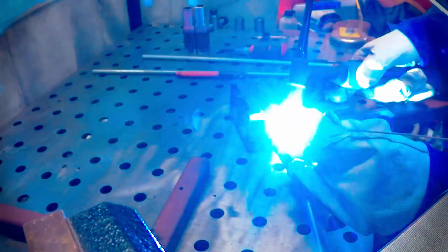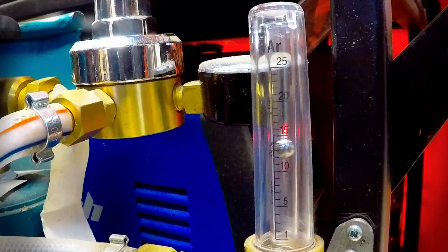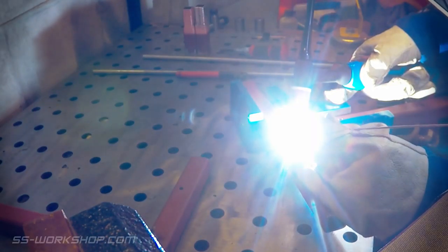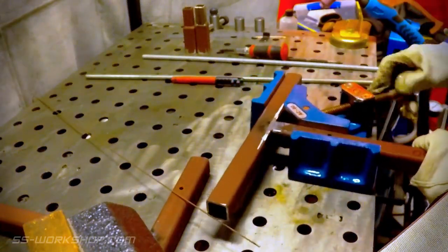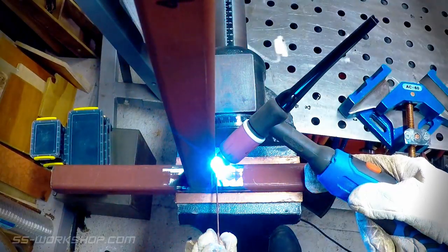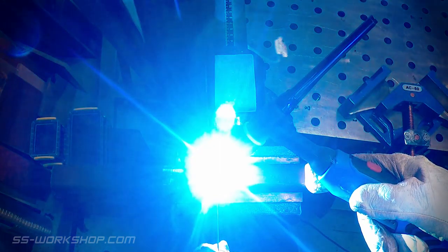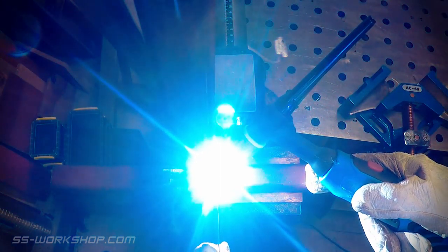When TIG welding the shielding gas is usually pure argon, which is what I'm using here today. The torch is usually controlled in one of two ways: either with a button on the torch which is just on off, or with a foot control which allows the amperage to be adjusted as you're welding. This is what I'm using today.